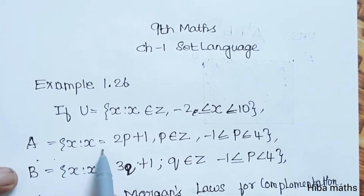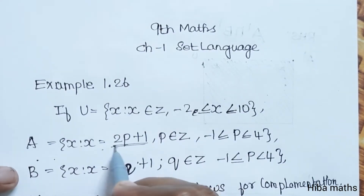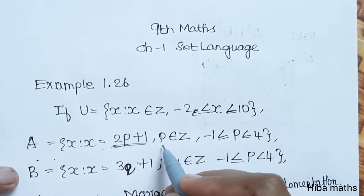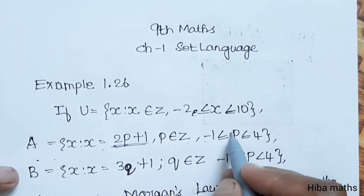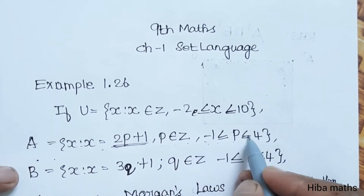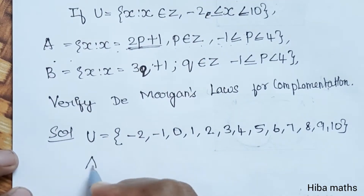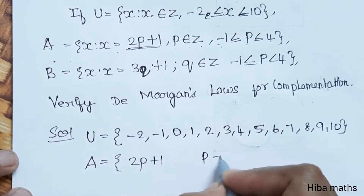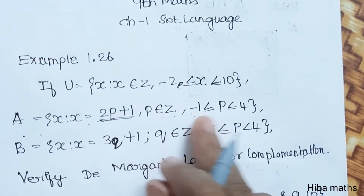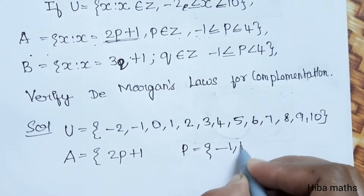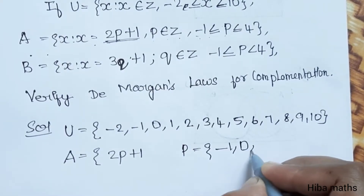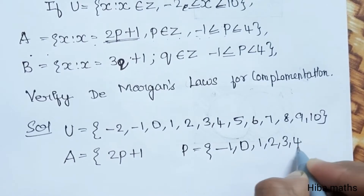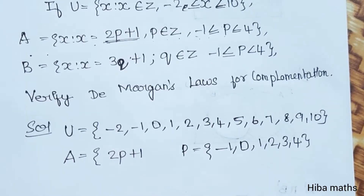A is equal to {x such that x equals 2p plus 1}, where p is an element of Z and p is greater than or equal to minus 1 and less than or equal to 4. So A equals 2p plus 1, where p goes from minus 1 to 4.